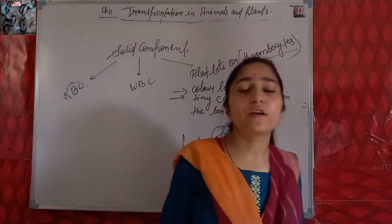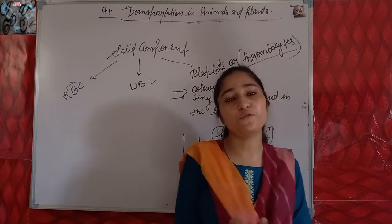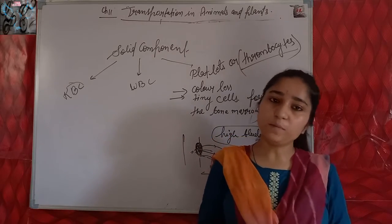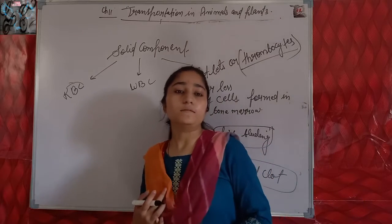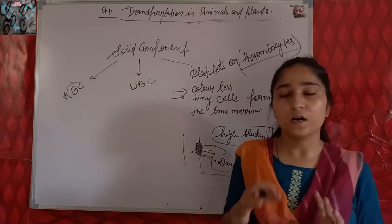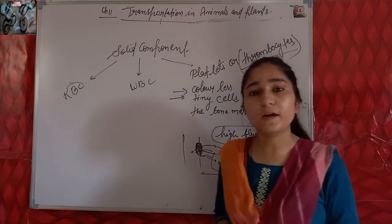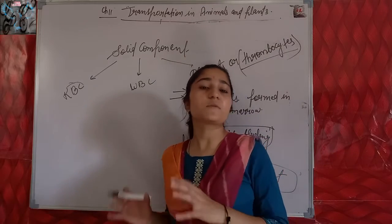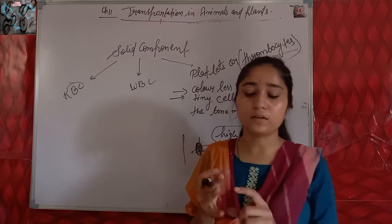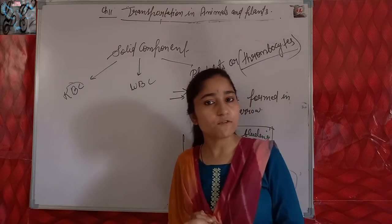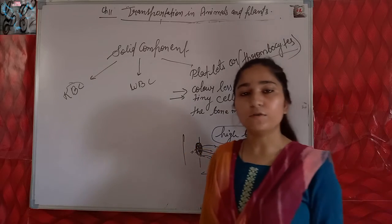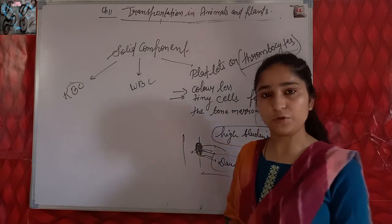So in this video we have discussed how various types of material get transported in our body from one place to another with the help of blood, and from what substances blood is made up. Blood is made up of solid components - RBC, WBC, and platelets - and fluid component plasma. Circulatory system consists of blood, blood vessels, and heart, and its function is to transport various materials in our body from one place to another. Thank you.